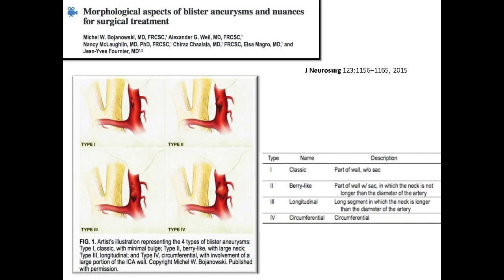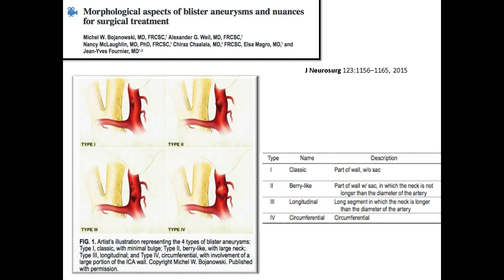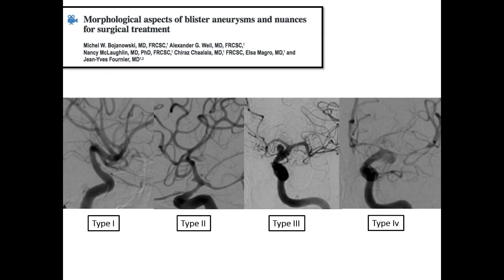A team from Montreal, led by Bozhanowski, described four morphological types of blister-like aneurysms. The first is a classic type — part of the wall. The second looks like a berry-like aneurysm. The third is more longitudinal. And the fourth is a circumferential aneurysm. On DSA, the first type appears classic, the second like a small berry aneurysm, the third more longitudinal, and the fourth type is all around the ICA.